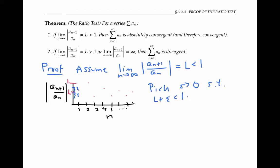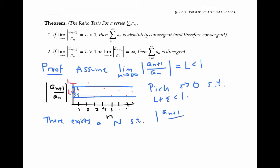By the definition of limit, if I go far enough to the right on the x-axis, all of my red dots are going to be trapped in between this epsilon interval around L. In mathematical symbols, this means there exists a number capital N such that the absolute value of the ratio of consecutive terms is between L minus epsilon and L plus epsilon for all little n greater than or equal to capital N.